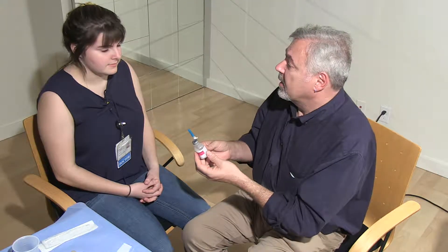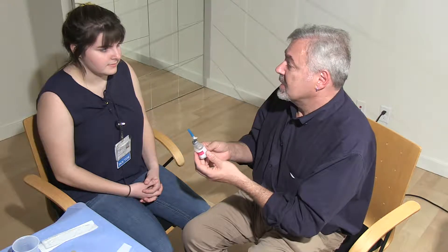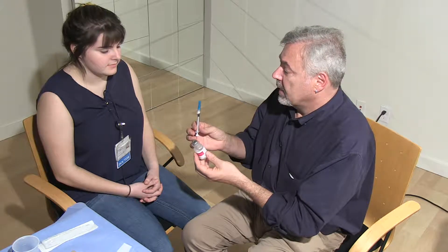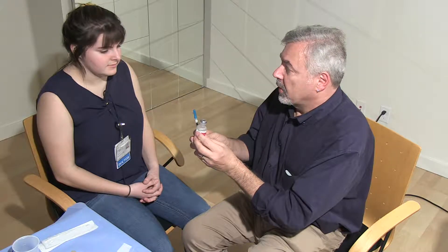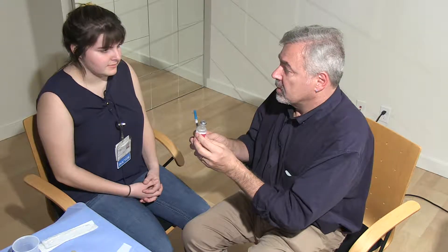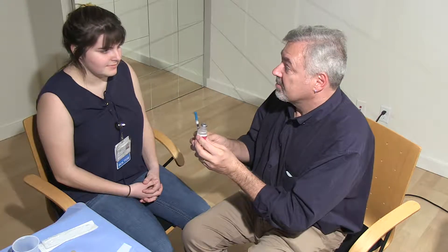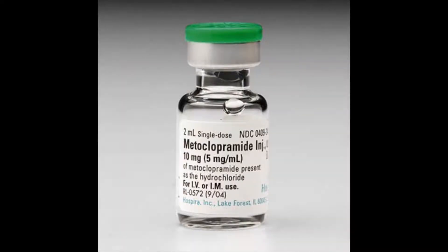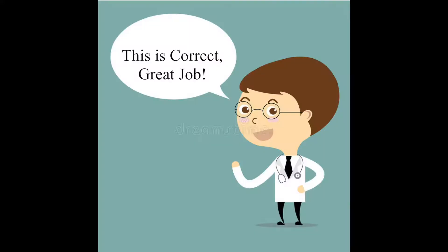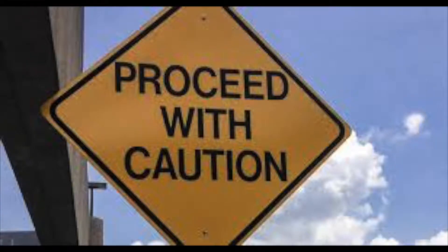Dr. Smith, please confirm. I have an order for Reglan 5 mg sub-Q times 1. I've drawn up 1 cc Reglan, 10 mg per 2 mL solution, from a multi-dose vial for sub-Q administration into patient Jane Doe. The provider will confirm that you've prepared the correct amount of the correct medication and instruct the medical assistant to proceed with the injection.